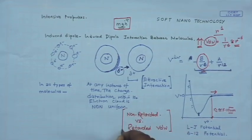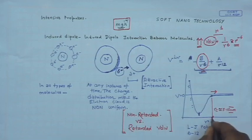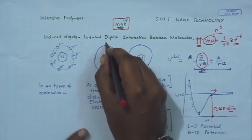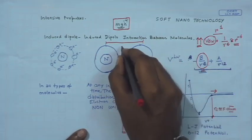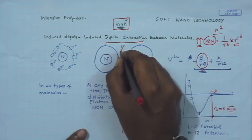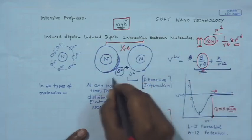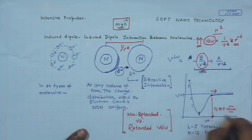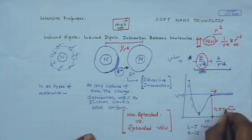This is not in the course, but is for your own learning. What we understand is that between two fundamental particles the attraction scales as 1 by r to the power 6, and the interaction stretches between roughly 5 to 10 nanometers.